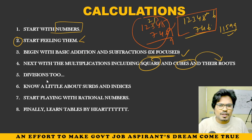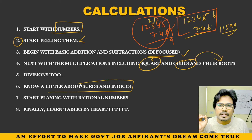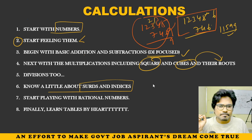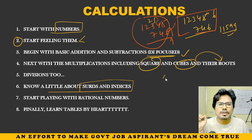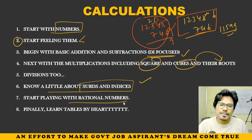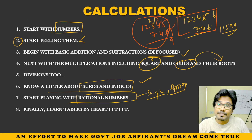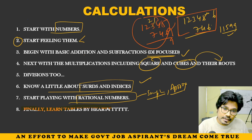Next, concentrate on divisions too, a little. Next, know a little about surds and indices — the concept of 2 plus root 3, and its conjugate. This one takes half an hour to one hour maximum. Next, start playing with rational numbers — simplification concept, banking approximation. Finally, finally — learn tables by heart.